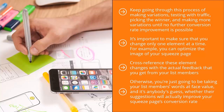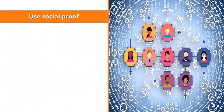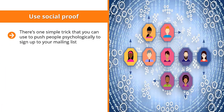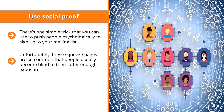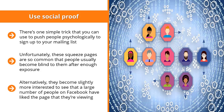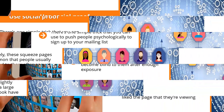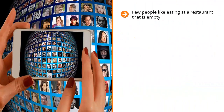Use social proof. There's one simple trick you can use to push people psychologically to sign up to your mailing list. We've all seen squeeze pages before — typically there's an email field, a call to action, and a submit button, maybe a nice graphic. Unfortunately, these squeeze pages are so common that people usually become blind to them. However, people do pay attention when they see that their Facebook friends have signed up to the list, or that a large number of people have liked the page they're viewing.